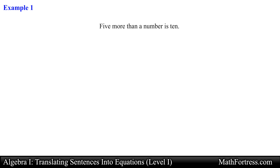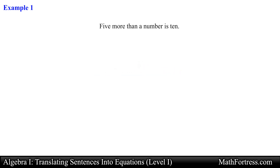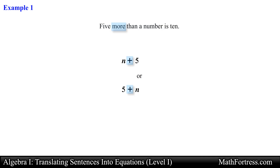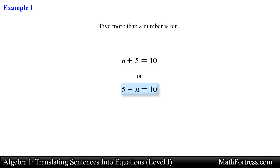The first part should be fairly easy. If not, I recommend you check the previous video titled 'Translating words into symbols.' The expression '5 more than a number' translates to n plus 5, or 5 plus n, because of the key word 'more' and remembering that when you add two numbers the order is not important. Next we add an equal sign because of the key word 'is,' and finally we include the number 10. The final equation is written as n plus 5 equals 10, or 5 plus n equals 10. Both expressions are acceptable.